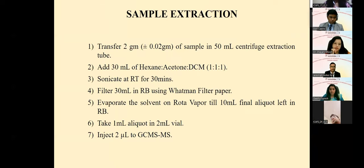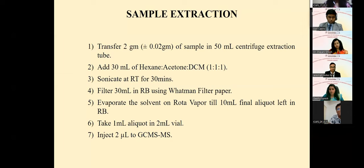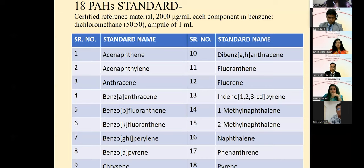For sample preparation, approximately five grams of hair were taken, to which ten grams of each ignitable liquid was added and completely burned. After burning, the sample was stored in an airtight glass chamber. For extraction, two grams of sample were extracted with 30 ml of hexane, acetone, and dichloromethane in a 1:1:1 ratio using a sonicator. The filtered extracts were then analyzed with a GC-MS/MS system.